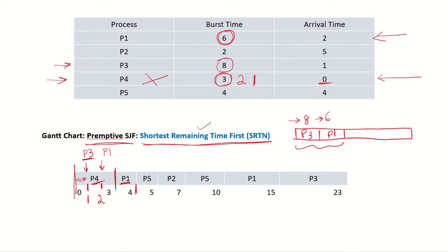At time 4, another process arrives in the system: P5. At this moment, the burst time of P5 is 4, and for P1, since it has run for one time unit, its remaining burst time is 5. Comparing 5 with 4, P5 has the shorter burst time. So P5 will be given the CPU, P1 is put back into the ready queue with remaining burst time of 5, and P5 starts running.